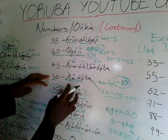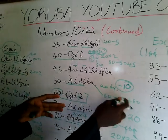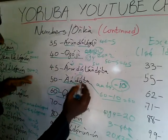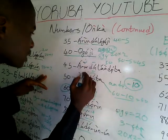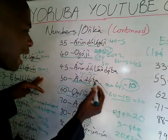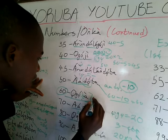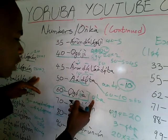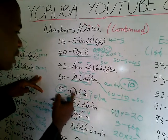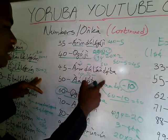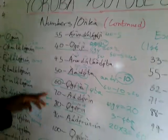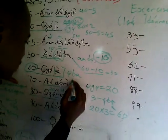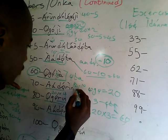So, 50 is Aado Ogota — that is 60 minus 10. The 'do' here is negative, and Ogota can also be shortened to Otta. So Ogota is 20 times 3, and 50 is 60 minus 10. For 70, it is Aado Logoji — that is 80 minus 10 to give us 70.